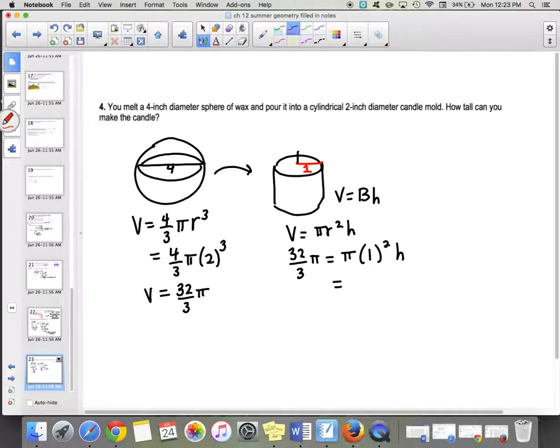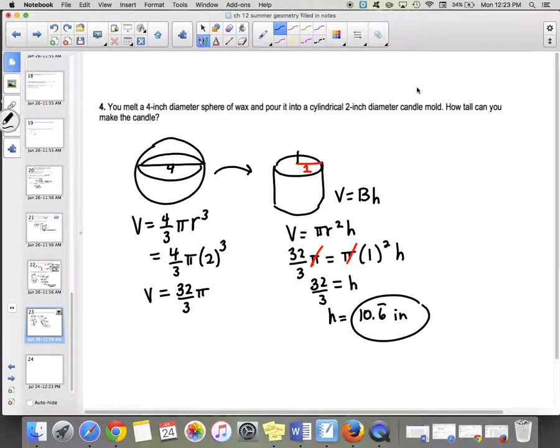So 1 squared times h. Our π's will go away. We get 32/3 = 1²h, which is just h. So our answer is 32/3. If you want to define that as a decimal, it would be 10.6 repeating, so 10 and 2/3 inches. That's the end of 12.5. Quick and painless.